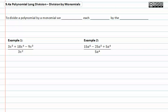To divide a polynomial by a monomial, we divide each term by the monomial.